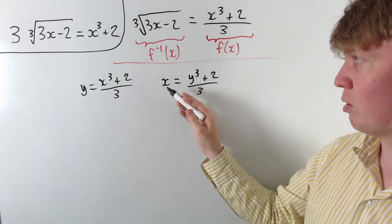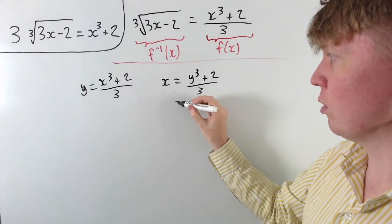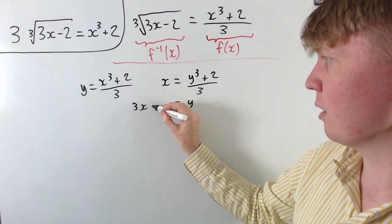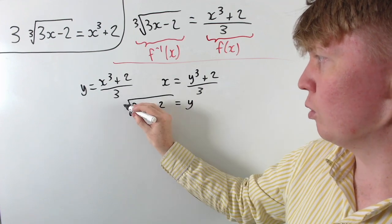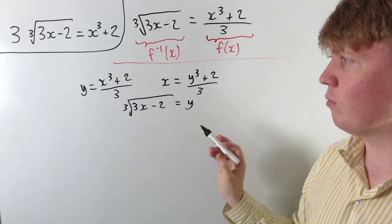So you see here we multiply by 3, subtract 2 and then cube root, so you do indeed get y equals 3x minus 2. The cube root of this is indeed our inverse function then.